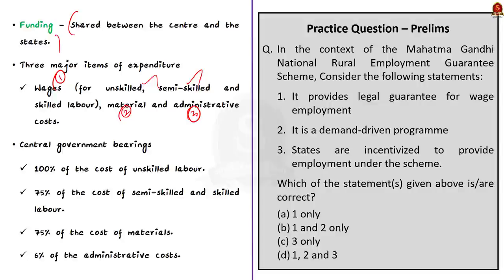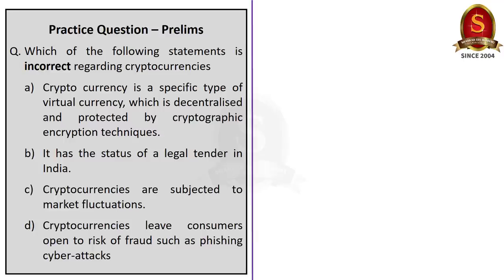Now let us look at some prelims practice questions. The first question is about cryptocurrencies: which of the following statements is incorrect? Option A: cryptocurrency is a specific type of virtual currency which is decentralized and protected by cryptographic encryption technique. Option B: it has the status of legal tender in India. Option C: cryptocurrencies are subjected to market fluctuations. Option D: cryptocurrencies leave consumers open to risk of fraud such as phishing and cyber attacks. The correct answer is Option B — cryptocurrencies are not legal tender in India.